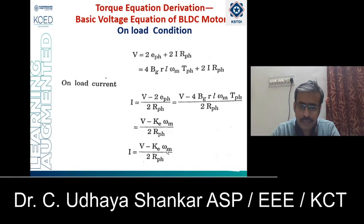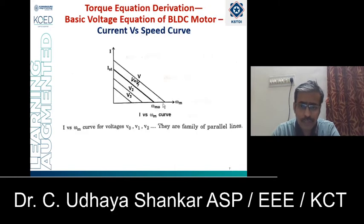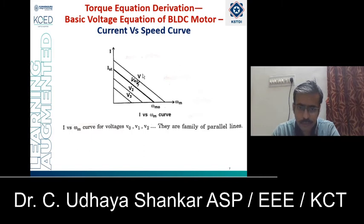From the current expression, we can see that as speed increases, current decreases — current and speed are inversely proportional. The curve is linear: as speed decreases, current increases. The curve is always proportional to the supply voltage V. When V is high, it follows the upper curve; if V is reduced, a parallel but lower curve results.